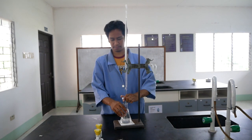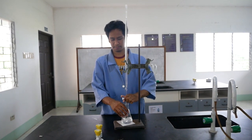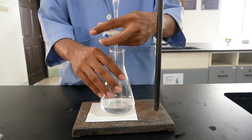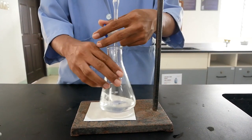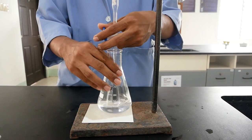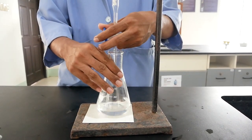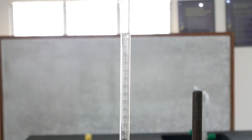Start titrating by slowly opening the burette stopcock and allowing the titrant to mix with the analyte. Make swirling motions with one hand while the other hand controls the drip by opening and closing the stopcock. The level of the titrant in the burette goes down accordingly.